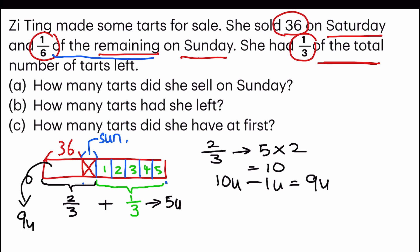And from then on, we can solve A, B, C very quickly. What do I mean? Because nine units equals 36, you can find one unit, which is 36 divided by 9 equals 4. So let's look at what the question wants. How many tarts did she sell on Sunday? Sunday, she sold one unit. So A is 4. The answer is 4 tarts.